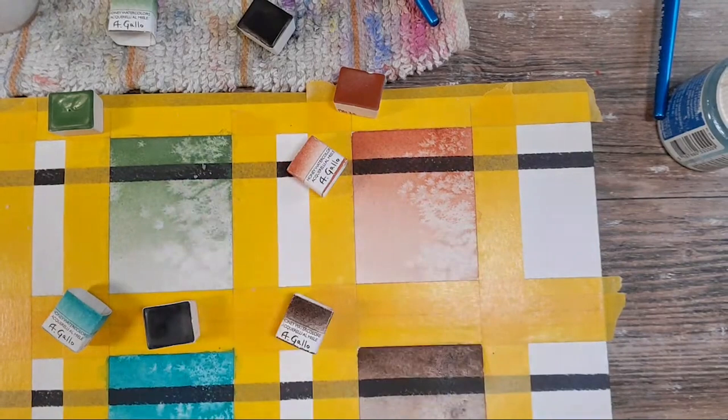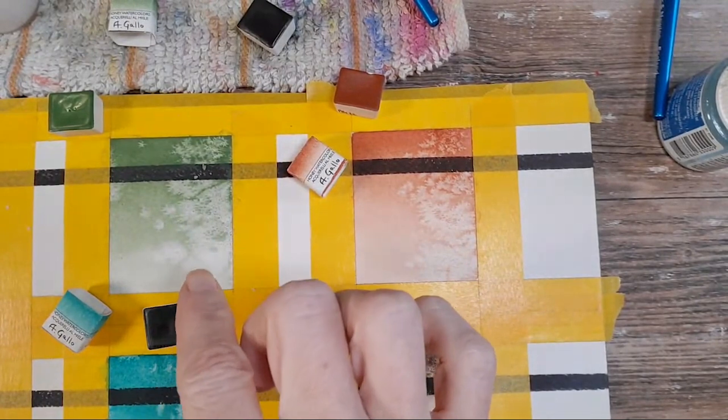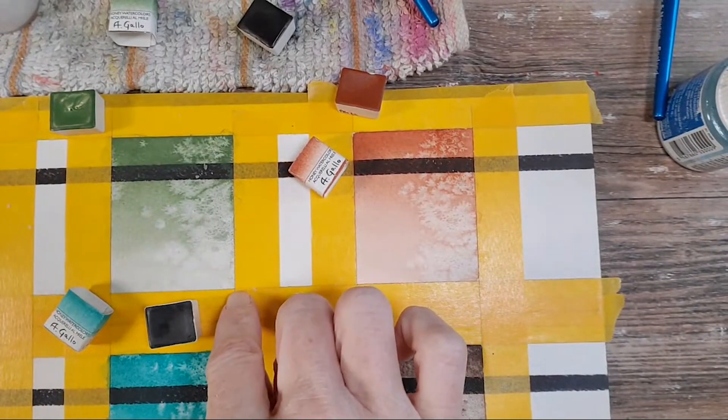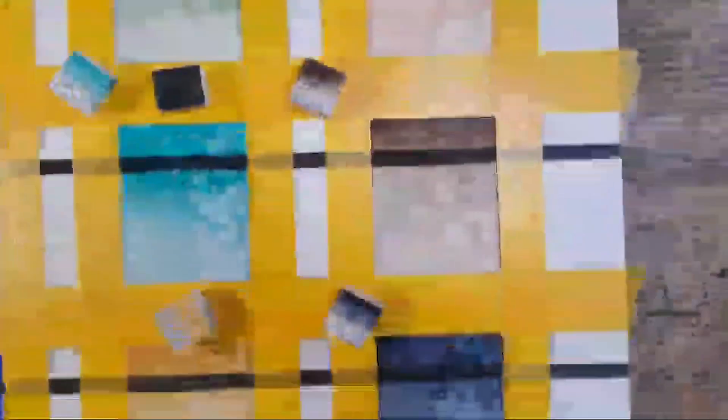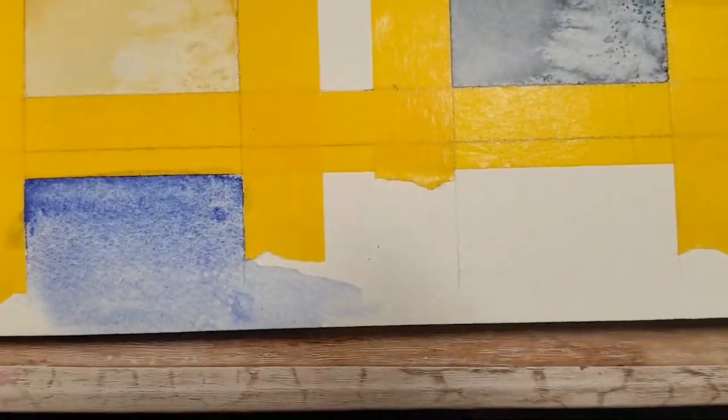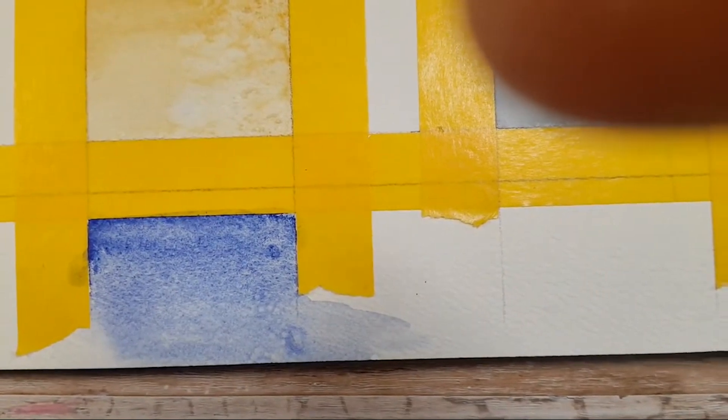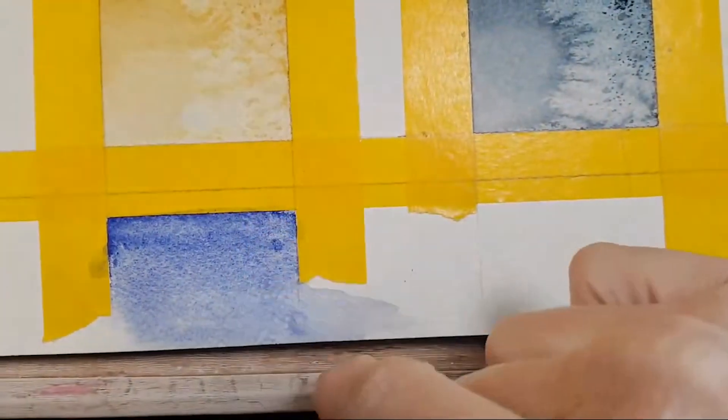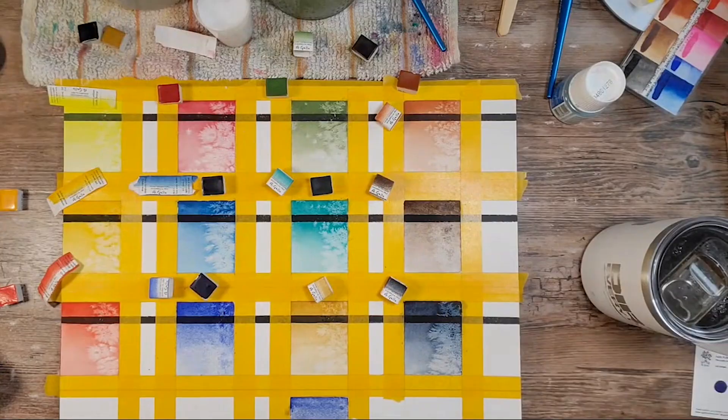So when this dried, when I first had it on there when it was wet, I wasn't sure what I thought of it. But dry, that's a pretty color. I think I could get behind using that. And let me show you this gorgeous Yinmen blue. Look at all that beautiful granulation. It is stunning. And I just put a little salt on this side, but all of this it did by itself.